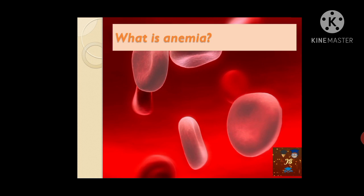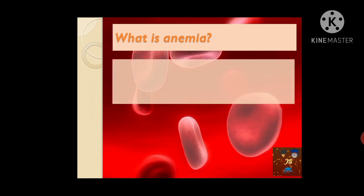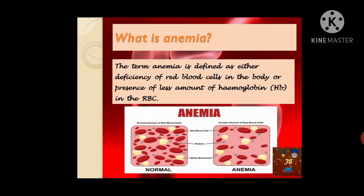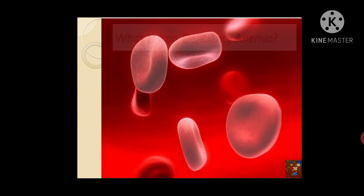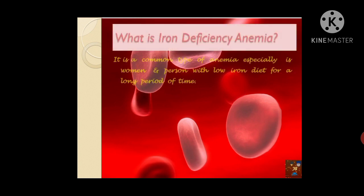Regarding anemia, it is considered to be when the hemoglobin amount is less or the amount of RBC is less in the body. As you can see in the picture, there is a normal amount of RBC, whereas in the anemic patient, a lesser amount of RBC is present.